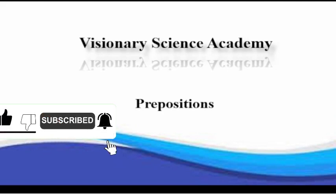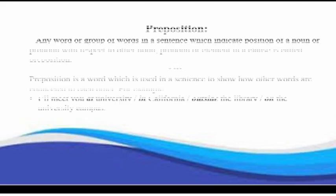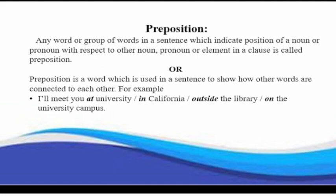Hi. My name is Catherine. We are going to discuss preposition today. It can be defined as any word or group of words in a sentence which indicate position of a noun or pronoun with respect to other noun, pronoun or element in a clause is called preposition. Or, preposition is a word which is used in a sentence to show how other words are connected to each other. For example, I'll meet you at university, in California, outside the library, on the university campus. Here at, in, outside and on are prepositions.